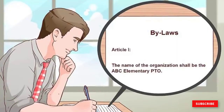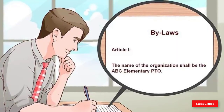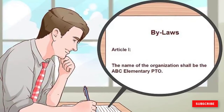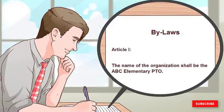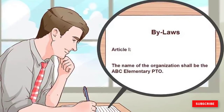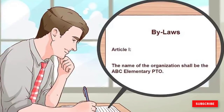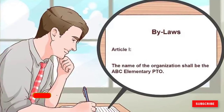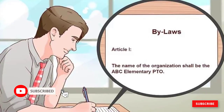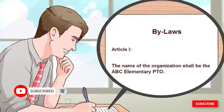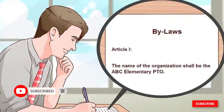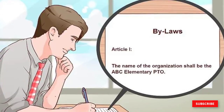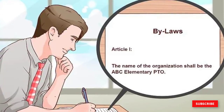Article I is a brief statement that identifies the official name of your organization. You can also give the primary operating location of your office in this article. If your organization is not physically fixed to a location — for example, if you are a primarily online group — you do not need to include an address.